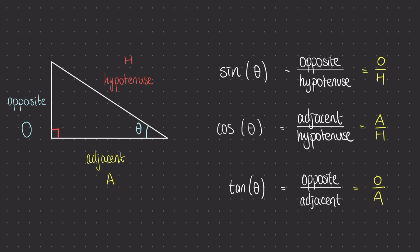On the right hand side we have our equations of sine, cos, and tan, and how they would be represented as ratios between those sides.